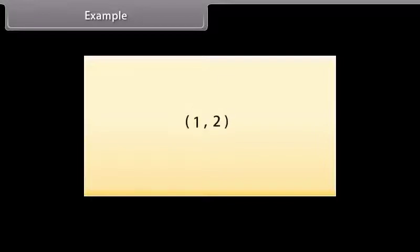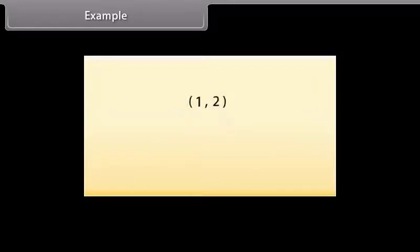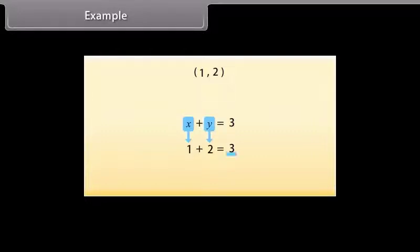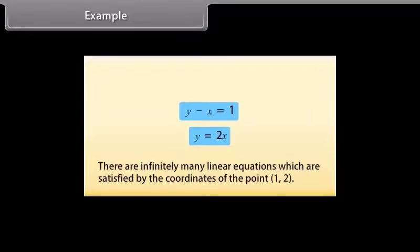Let us go through an example now. Take the point (1, 2). We'll find the equation of a line on which it lies. Since (1, 2) is a solution of a linear equation, we will look for any line passing through the point (1, 2). One example of such a linear equation is X plus Y is equal to 3, because when we put X as 1 and Y as 2, we get the answer 3. Other examples are Y minus X is equal to 1, and Y is equal to 2X. In fact, there are infinitely many linear equations which are satisfied by the coordinates of the point (1, 2).